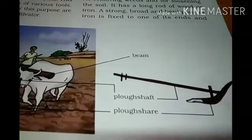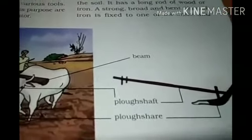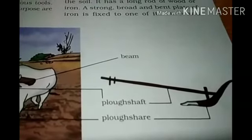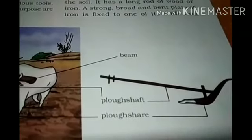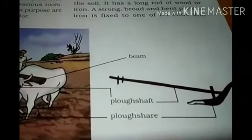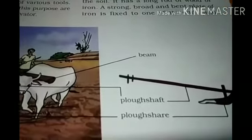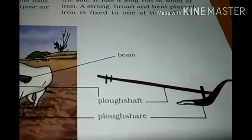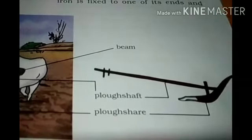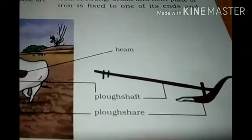Plows are made of wood and iron. If the soil is very dry, it may need watering before plowing. The plowed field may have big clumps of soil called crumbs. It is necessary to break these crumbs. Leveling the field is beneficial for sowing as well as for irrigation, and is done with the help of a leveler.